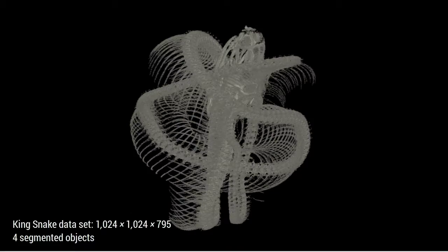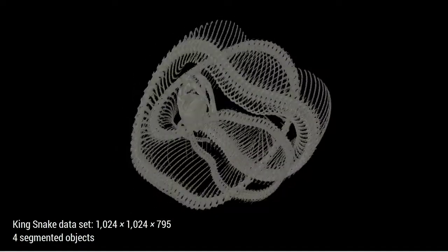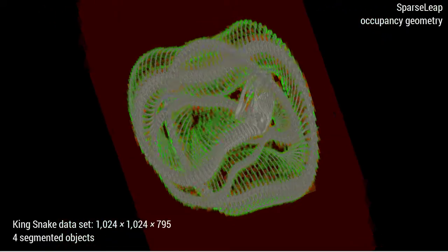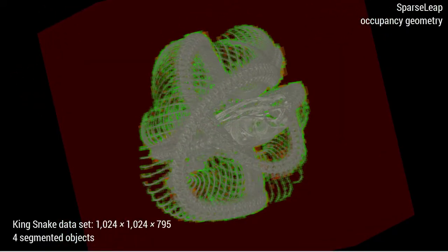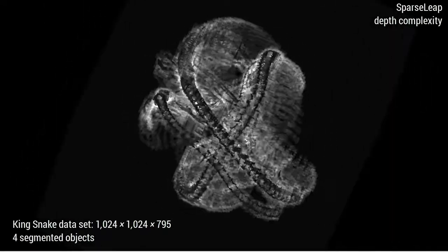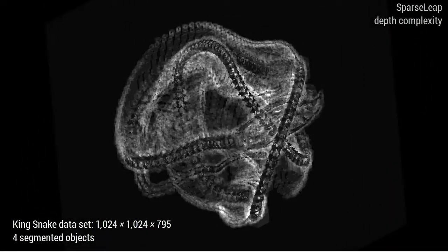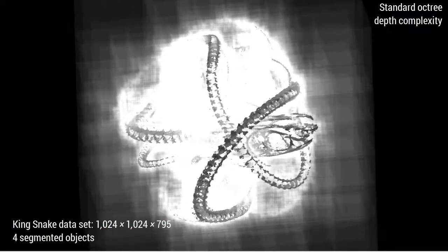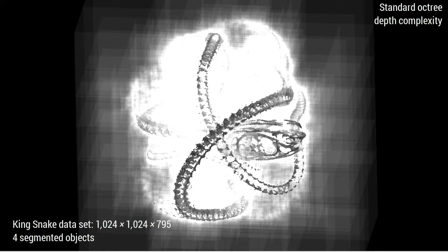The main target of SparseLeap are finely detailed structures such as the skeleton of this king snake. We can see that the green, non-empty boxes of the occupancy geometry nicely surround the fine structures of the skeleton, which leads to efficient empty space skipping with a very low depth complexity. In contrast, the depth complexity of octree empty space skipping becomes very high for such a detailed dataset.